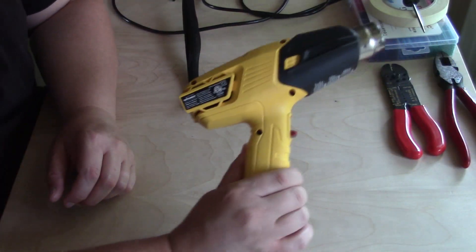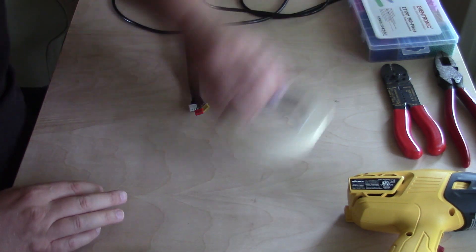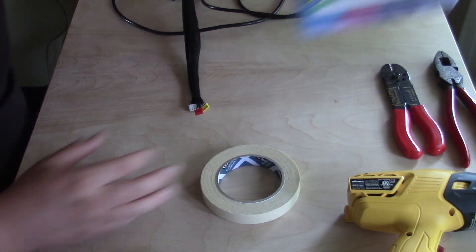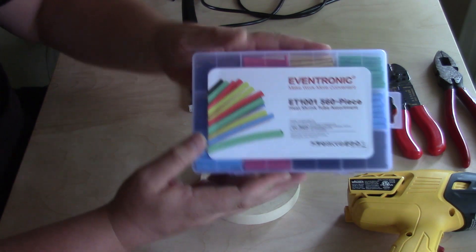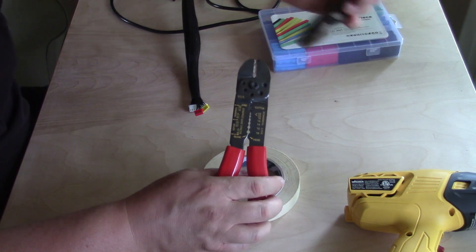We will also need a heat gun or you can use a lighter, some tape for marking, heat shrink tubing, a wire stripper, and wire cutters.